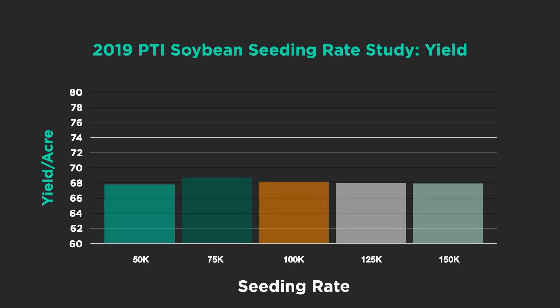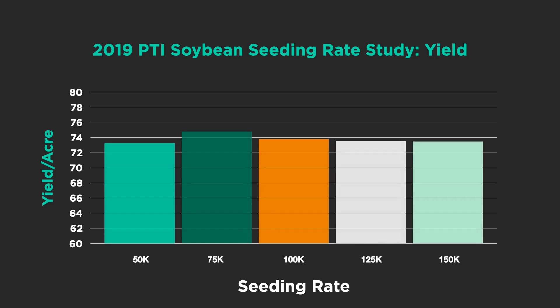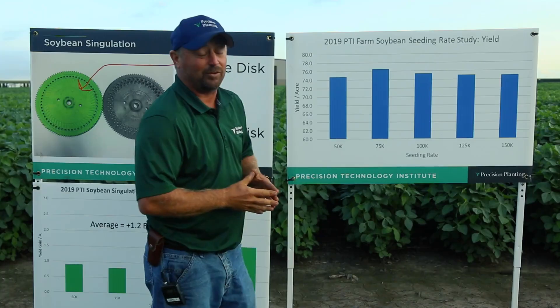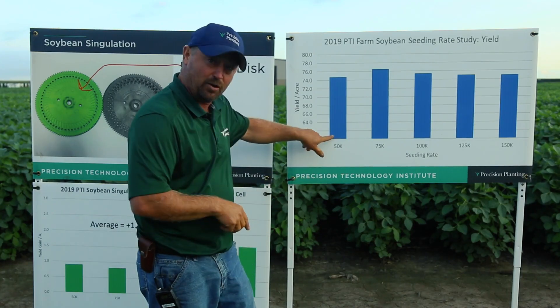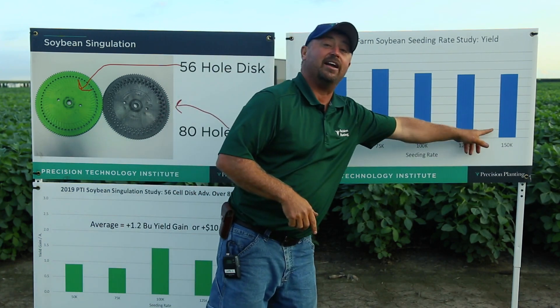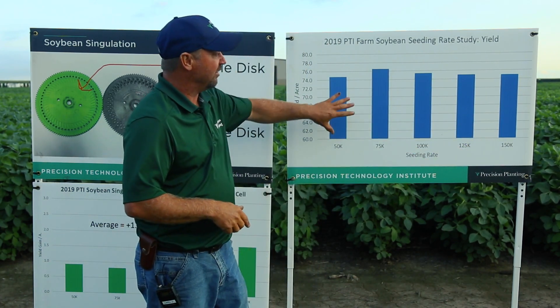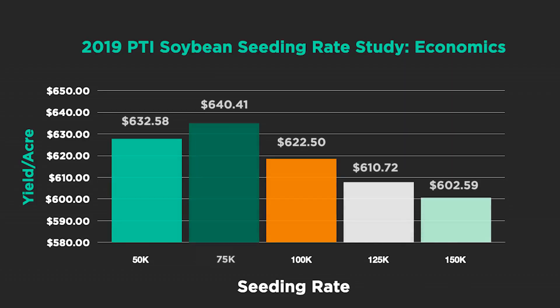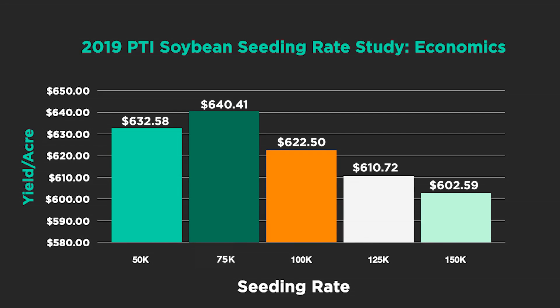Let me show you some yield data from 2019. We ran soybeans from 50,000 seeds per acre and ramped it up 3x to 150,000. There was only about a two-bushel spread in yield from the lowest to the highest seeding rate. But when you look at the economics and account for seed cost, 75,000 seeds per acre wins this study — making the grower the most money on a per-acre basis.